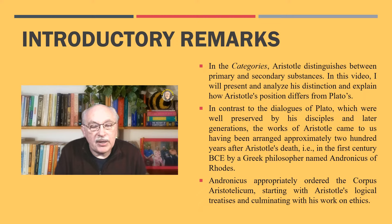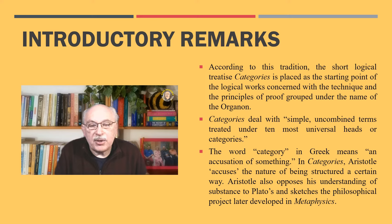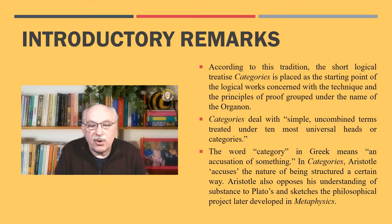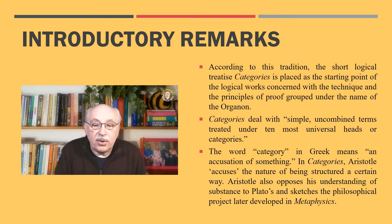Andronicus belonged to the school of Stoicism, which claimed ethics as the most crucial philosophical discipline. Thus Andronicus appropriately ordered the Corpus Aristotelicum starting with Aristotle's logical treatises and culminating with his works on ethics. According to this tradition, the short logical treatise Categories is placed by Aristotle's first editor as the starting point of the analytical works concerned with the technique and principles of proof, grouped under the name of the Organon.